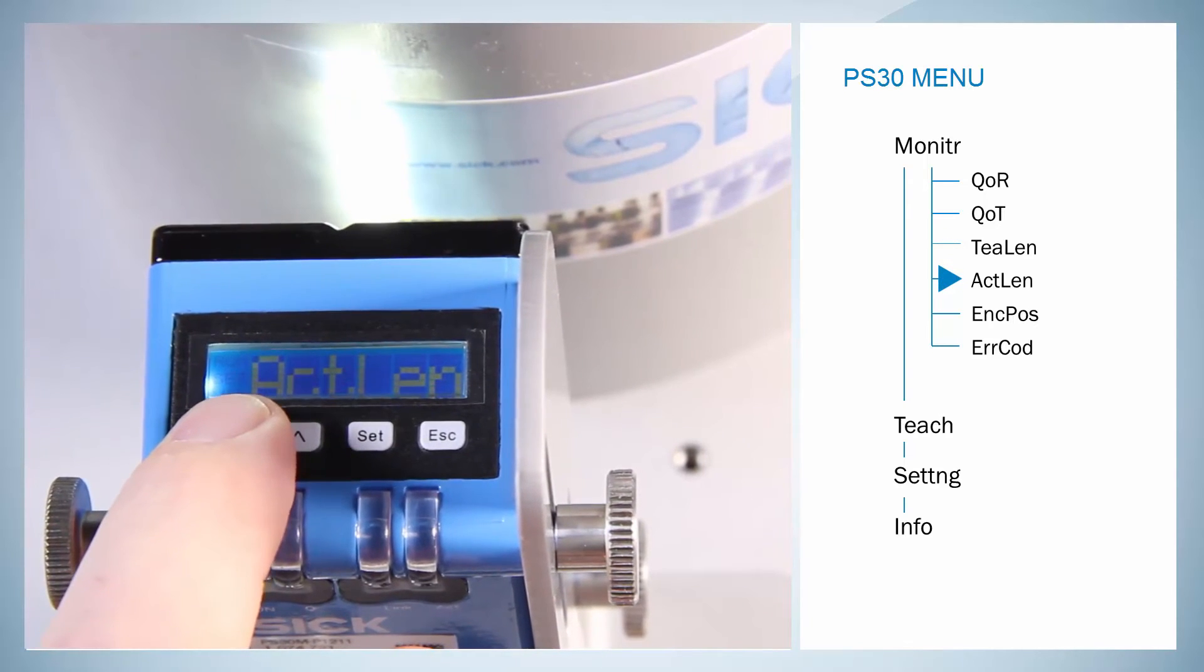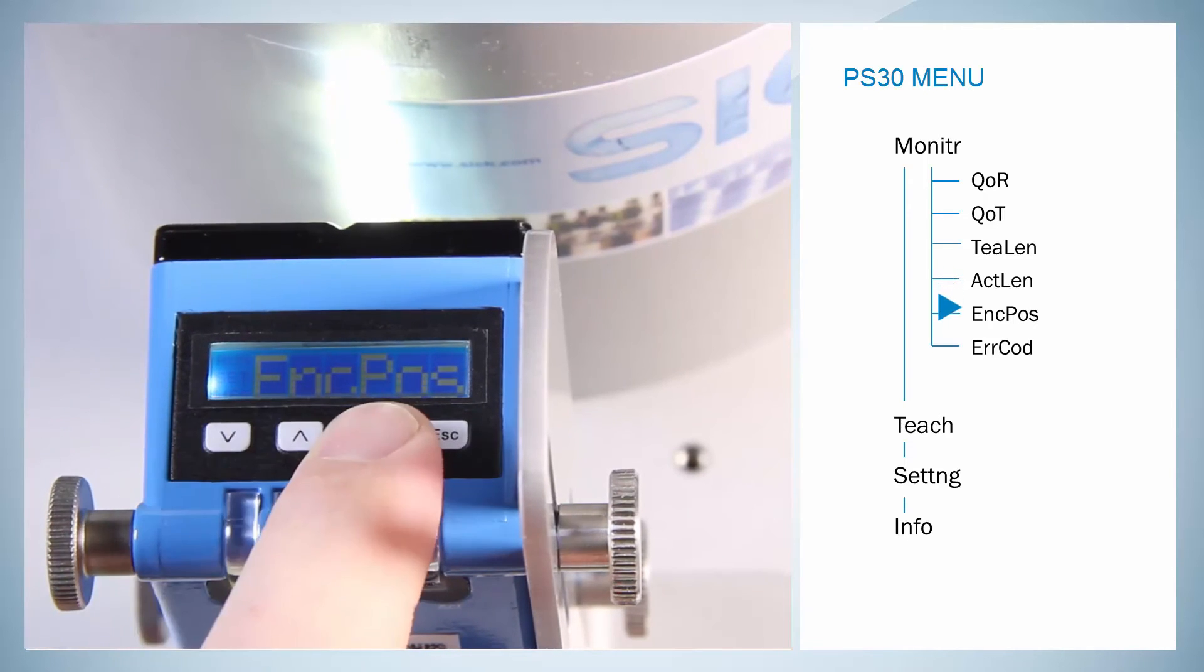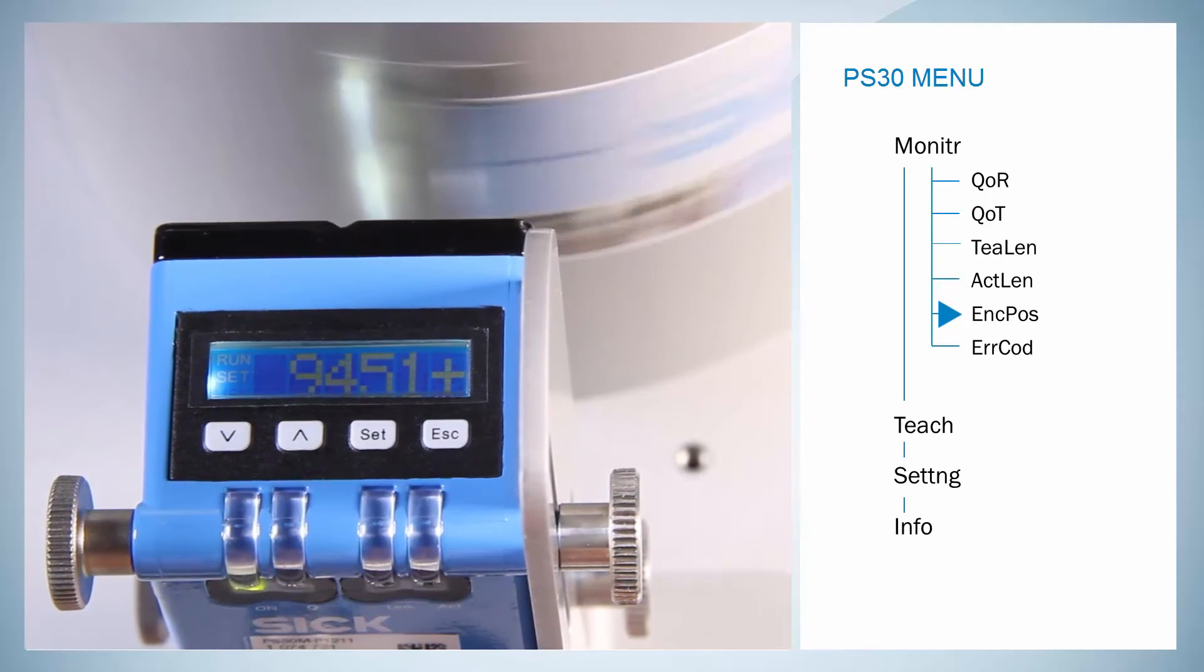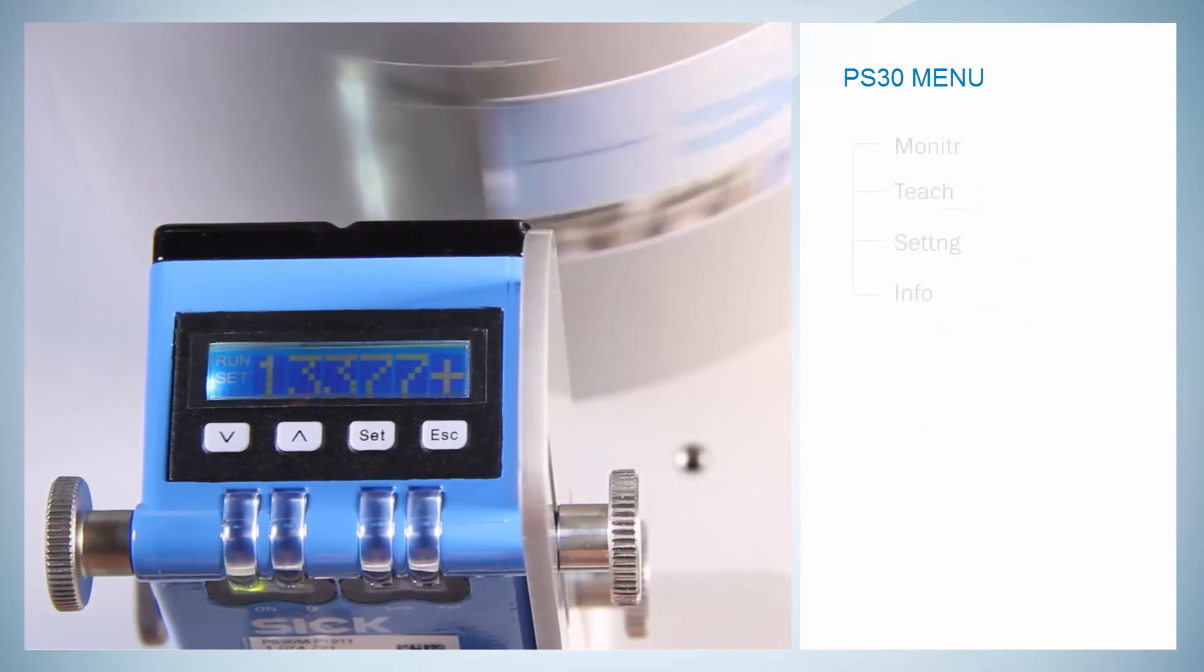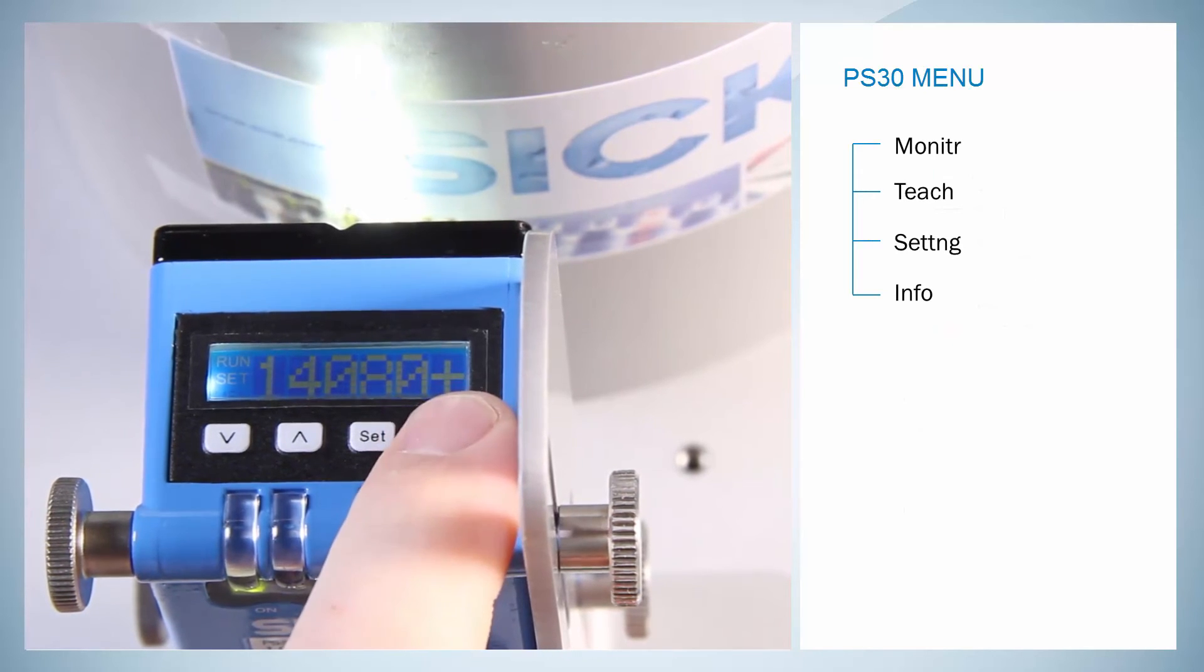Actual length: in the mode Endless material, the detected label length is shown. Encoder position shows the current encoder position. One gets back to the main menu by pressing the Escape button.